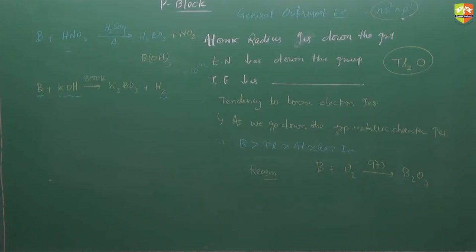Write down reactivity towards halogen. The elements of group 13 react with halogen and form trihalide of MX3 type. The trihalide of thallium does not exist. Why?